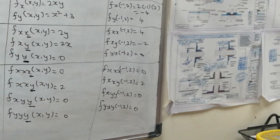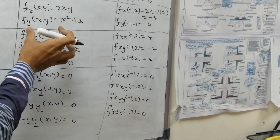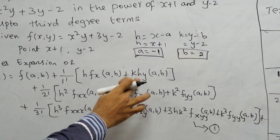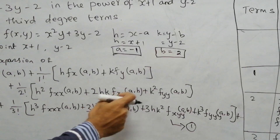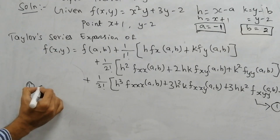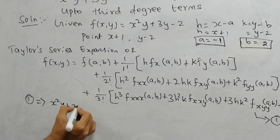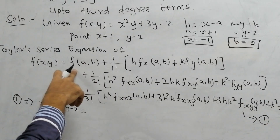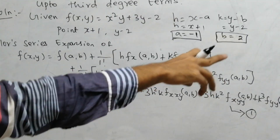Now we have found all the required values. We substitute all values into the Taylor series formula, equation number 1. The function f(x,y) equals x squared y plus 3y minus 2. We now plug in f(a,b) and all partial derivative values at (minus 1, 2).